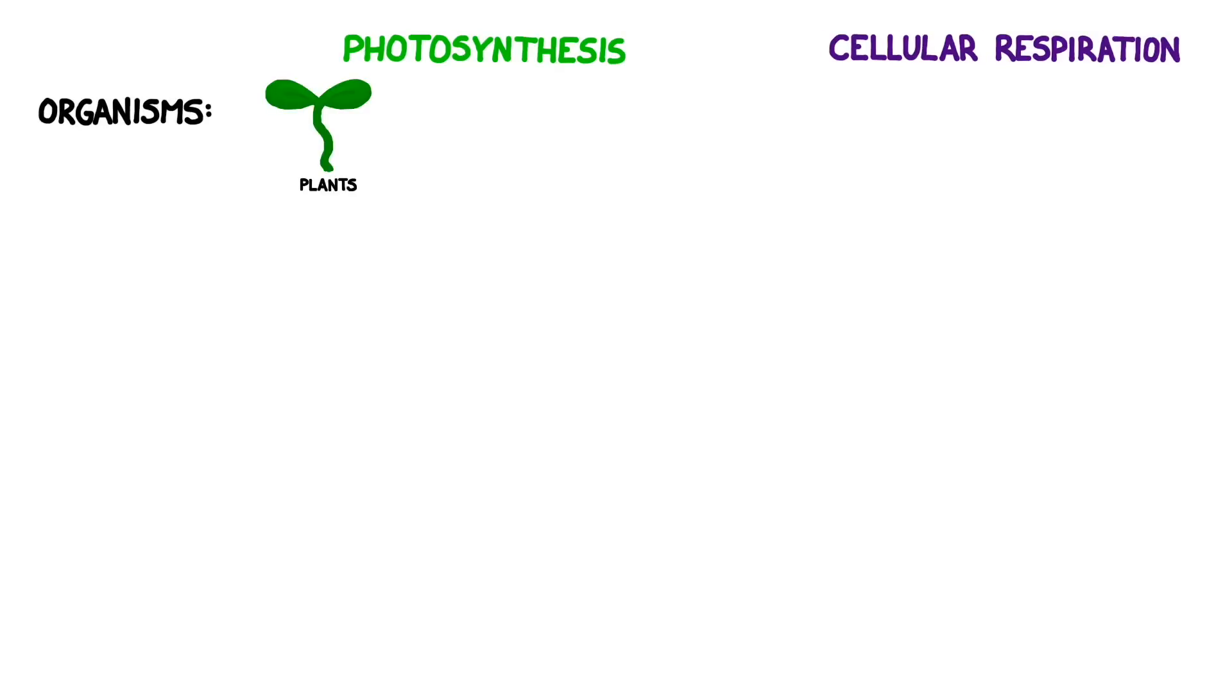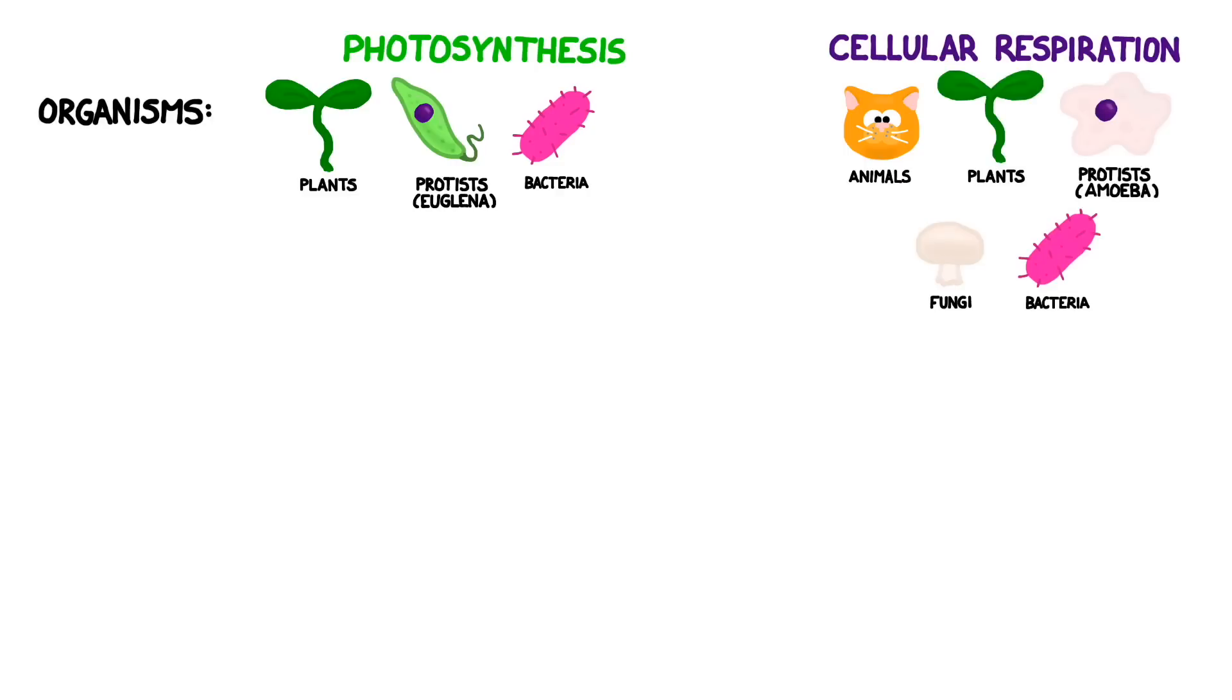Most people know that plants do photosynthesis and that animals undergo cellular respiration, but this is actually an incomplete picture. A number of different kinds of organisms can do each process, and some of them can even do both. For instance, plants use cellular respiration when they're germinating from their seeds and don't have any leaves yet.